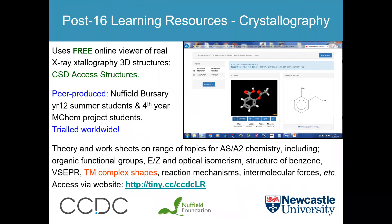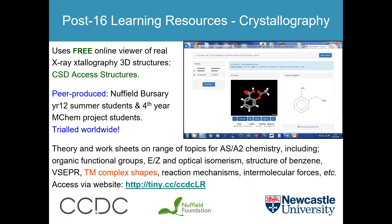There's a link in the index page of the revision guide to a resource called ChemTube3D from the Cambridge Crystallographic Data Centre. You can look at real 3D X-ray crystal structures — like that structure of aspirin — and use it to explore shapes of transition metal complexes, including the cis-trans and optical isomers of the nickel EN complexes. It's free to access, and resources have been produced by A-level students doing Nuffield projects.